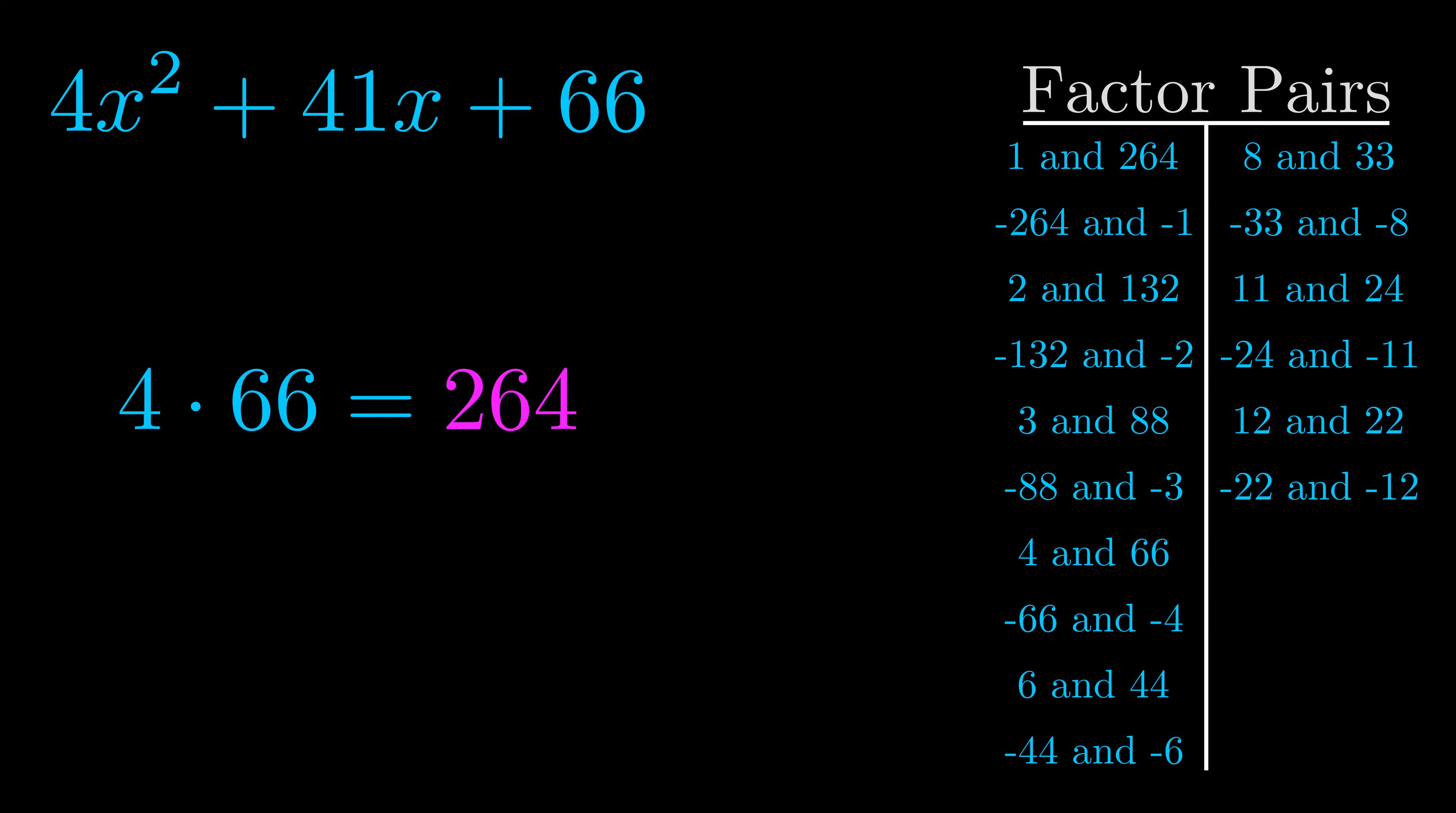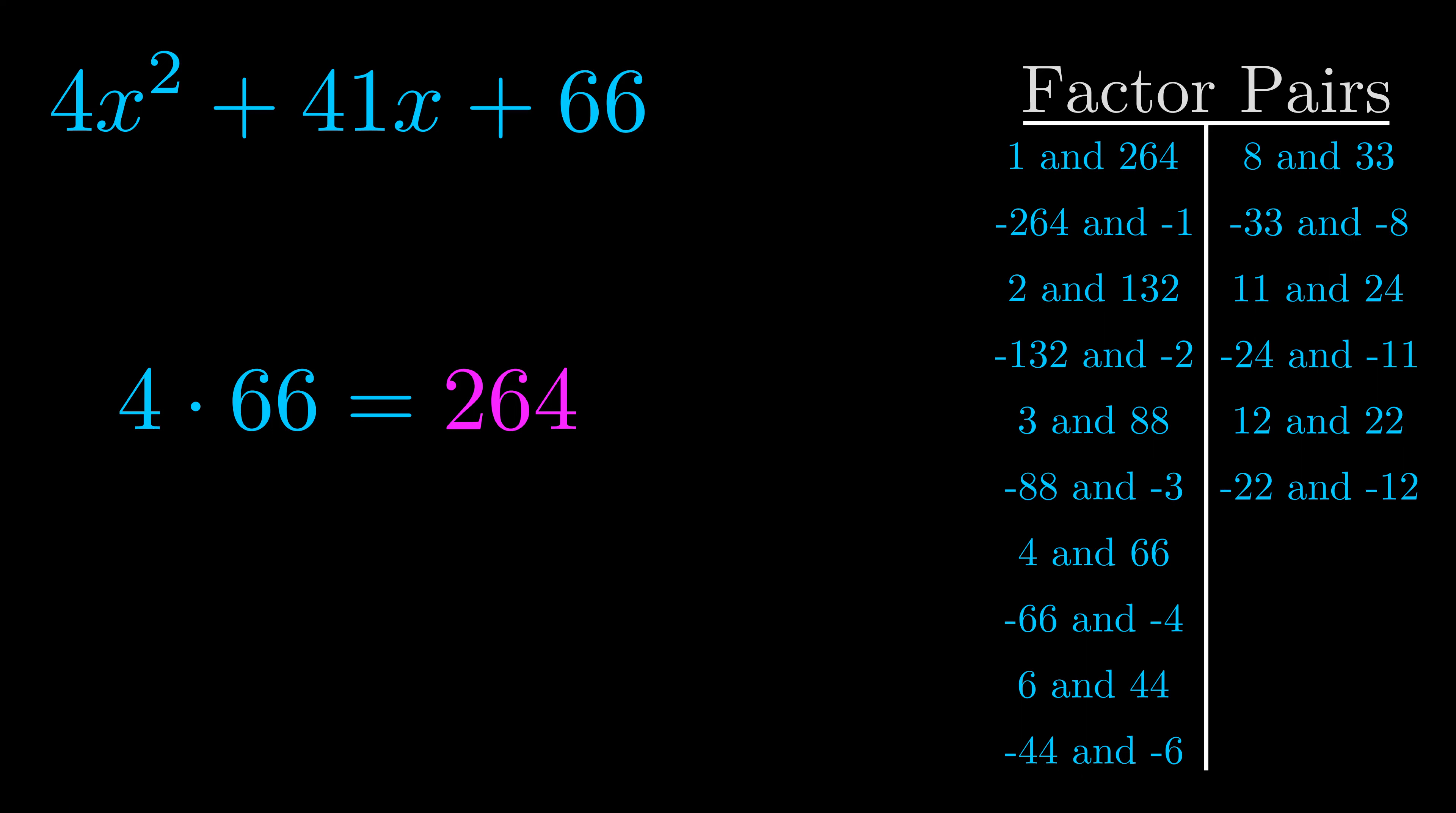Now once you have these factor pairs the goal is to find which of these pairs adds to the b value. The b value is the coefficient on the x term. That's the middle term, the one that we haven't done anything with yet.